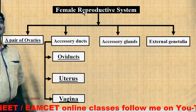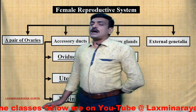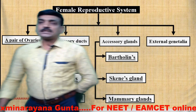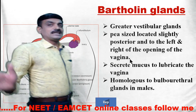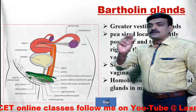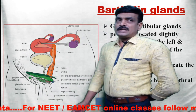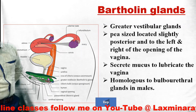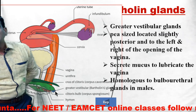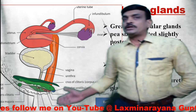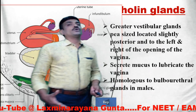There are three accessory glands: the Bartholin glands, the Skene's glands (both paired structures), and the mammary glands. The Bartholin glands, also called greater vestibular glands, are pea-sized structures located slightly posterior to the left and right of the vaginal opening. These Bartholin glands secrete mucus to lubricate the vagina for smooth sexual intercourse.